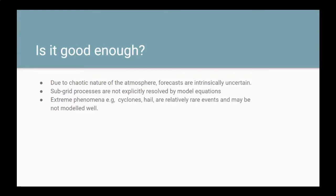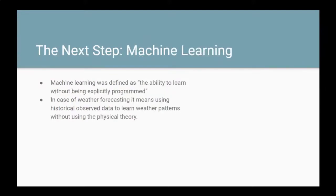Ensemble models have improved by about one and a half days per decade — five-day forecasts in 2017 are as accurate as three-day forecasts were in 2001, representing a predictability gain of about two days over 16 years. However, ensemble methods are finite, typically employing 5 to 50 members, meaning the raw output doesn't capture the full range of possibilities. Sub-grid processes and extreme phenomena are still not modeled well. The next step can be machine learning and deep learning — using historical observed data to learn weather patterns without relying explicitly on physical theory.